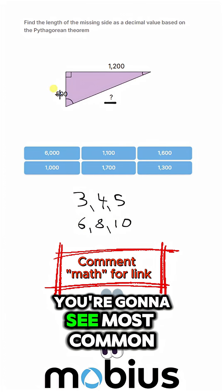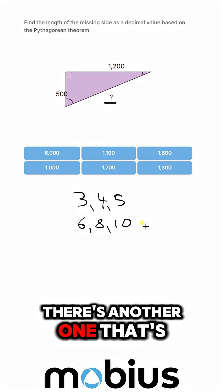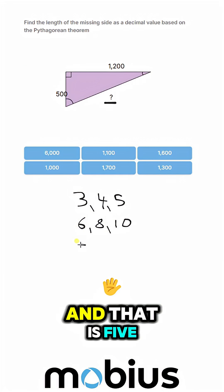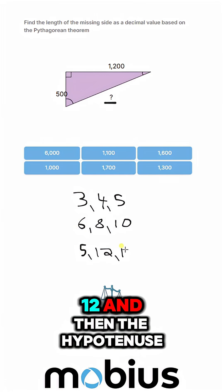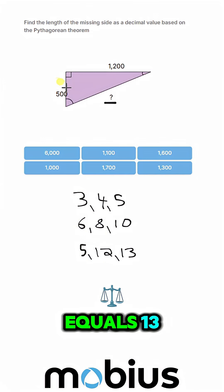That's the one you're going to see most commonly. There's another one that's going to be second most common, and that is 5, 12, and then the hypotenuse equals 13.